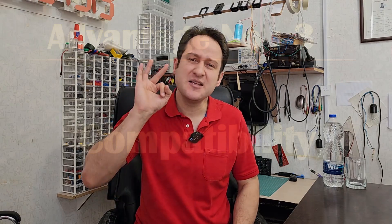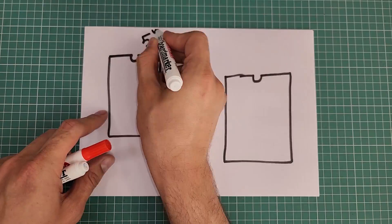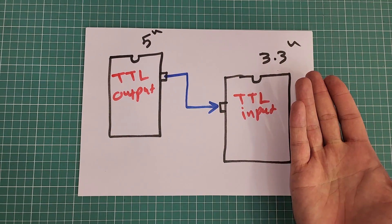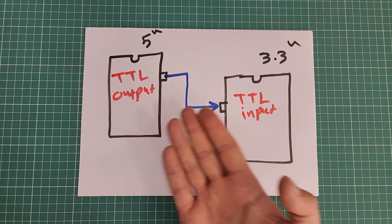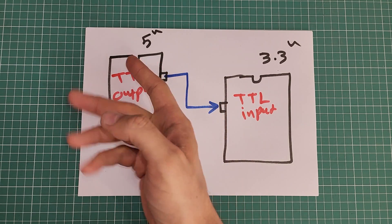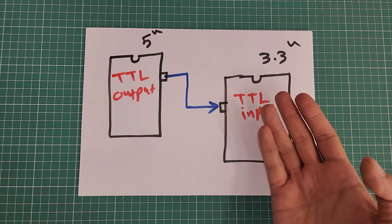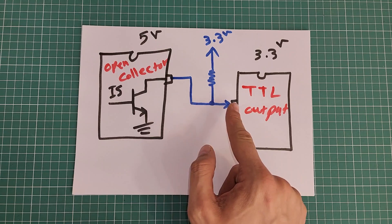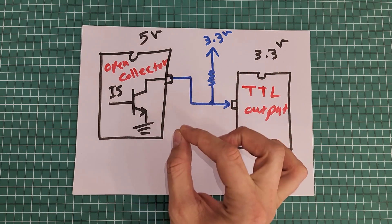Advantage number three: compatibility. Open collector outputs are compatible with all logic levels and can be used as input for all of them. For example, suppose this MCU is operating on 5V and this one on 3.3V. You can't directly connect a TTL output from the 5V MCU to the input of the 3.3V MCU because when the output becomes active it puts 5V on the line and it will harm the 3.3V MCU. But if the output type is open collector, we can pull up this point to 3.3V using a resistor and it will work fine — the open collector output makes these MCUs compatible.